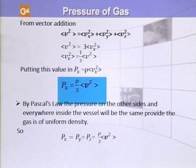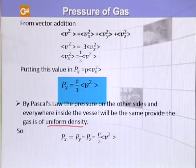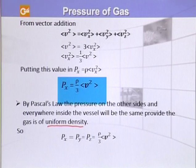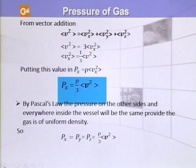Now, according to Pascal's law of pressure, the pressure exerted on all sides inside a vessel is the same when the density of the gas is uniform. If the gas has uniform density in all directions, the pressure it exerts will be the same on all sides. So whether we talk about X, Y, or Z direction, the pressure for a gas of uniform density will remain the same. In general, P = (1/3) rho V².